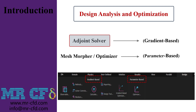For example, in problems related to aerodynamics, parameters such as drag force and lift are among the parameters that we need to optimize, and these parameters can be used in the adjoint solver. So our first choice would be the adjoint solver. And if the parameter we need is not part of the available parameters in the adjoint solver, then we will have to go to the mesh morpher.